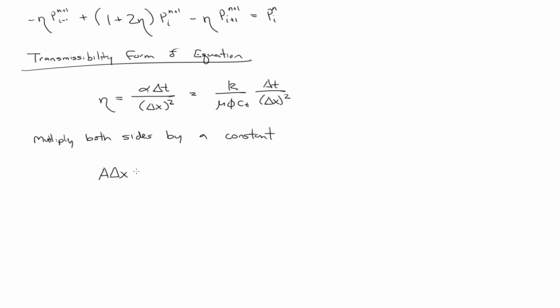Times delta x times phi ct over the formation volume factor over delta t. And another way you might write that is V_i, the volume of the i-th grid block times the porosity times the total compressibility over the formation volume factor over delta t.